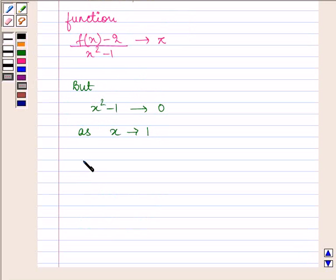the function f(x) minus 2 divided by x squared minus 1 equals 0 divided by 0 for x approaches 1. And,